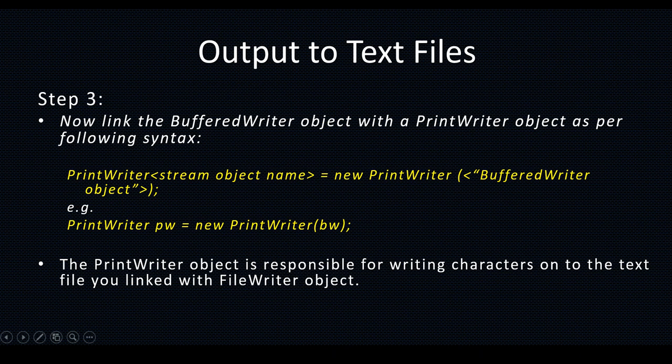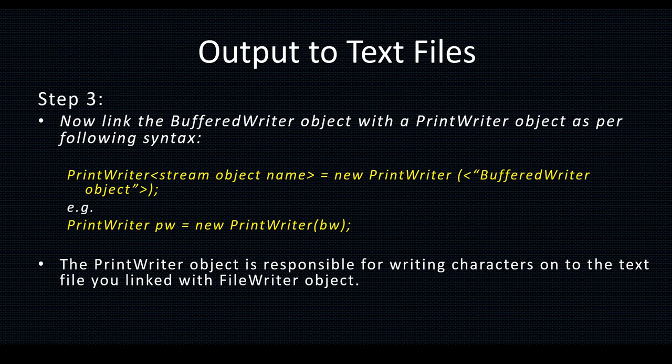Step 3: link the BufferedWriter object with the PrintWriter object as per the following syntax. PrintWriter is the object used to store data into the text file. The syntax is: PrintWriter streamObjectName = new PrintWriter(bufferedWriterObject). So FW is linked to BW, and now BW is linked to PW. For example: PrintWriter PW = new PrintWriter(BW). All three — FileWriter, BufferedWriter, and PrintWriter — have been created and linked in order.